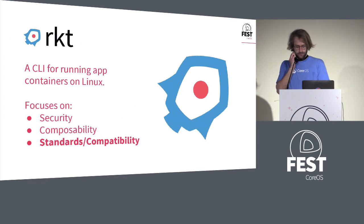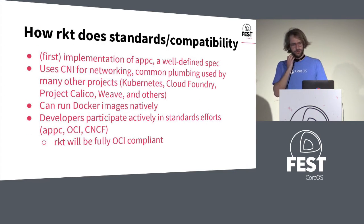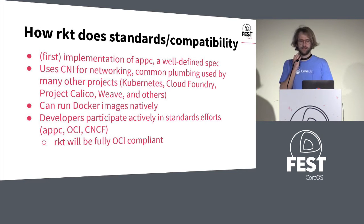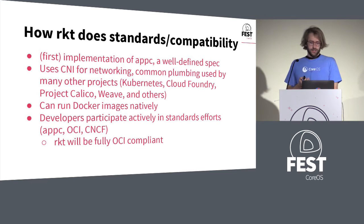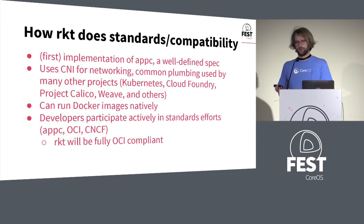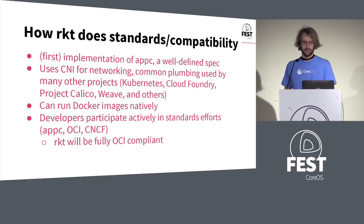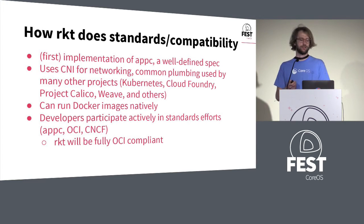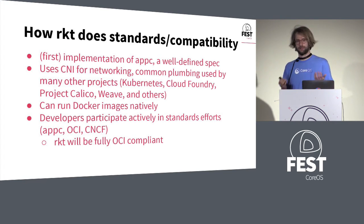That was a bit about composability. The final aspect of Rocket I want to talk about is standards and compatibility. There are a few ways Rocket approaches this. When Rocket first came out, it was intended to drive a conversation around standardizing things in the industry, because containers were being widely adopted but it was really just a de facto standard. Nothing was written down about what a container is, what a container image format is, what it means for an application to run in a container. We wanted that to be well-defined so people could build tools against it. With that in mind, we developed AppC, our first attempt at a specification for containers. That's what Rocket implements and uses as its native format today.